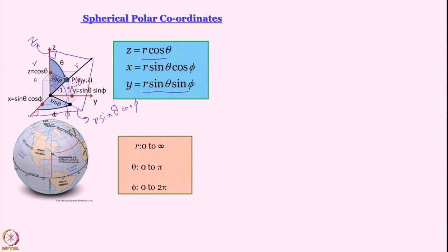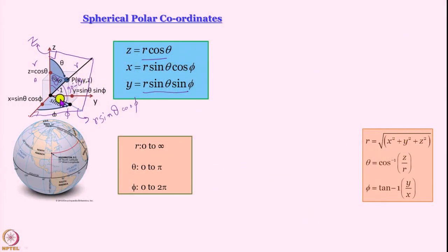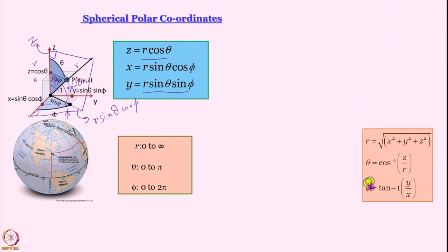You can work out the inverse relations: r = √(x² + y² + z²), which is the body diagonal of the cuboid with sides x, y, z. From cosθ = z/r, we get θ = cos⁻¹(z/r). For φ, since sinφ/cosφ = y/x, we get φ = tan⁻¹(y/x). These relations can always be derived — they are not difficult.